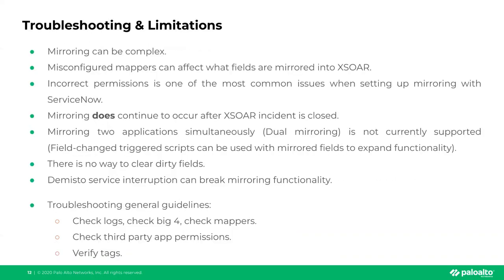Let's briefly cover limitations and troubleshooting guidelines before the demo. Mirroring can be a complex process with many moving parts — classifiers, mappers, incident types, permissions, etc. Misconfigured mappers can affect what fields are mirrored into XSOAR. Incorrect permissions is one of the most common issues when setting up mirroring with ServiceNow, Jira, and other tools. Also note that mirroring continues to occur even after the XSOAR incident is closed.